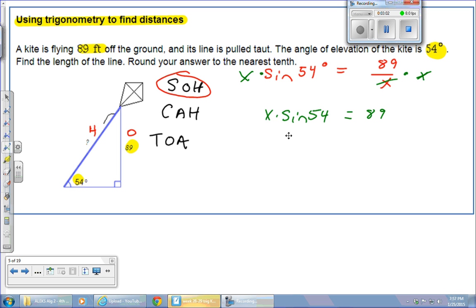So you're left with 89 is equal to x times the sine of 54. Well, we want x by itself. So next step, get rid of the sine of 54. And because you're being multiplied, you have to divide. So I divide both sides by the sine of 54. These two will cancel. That leaves me with x is equal to 89 over the sine of 54.